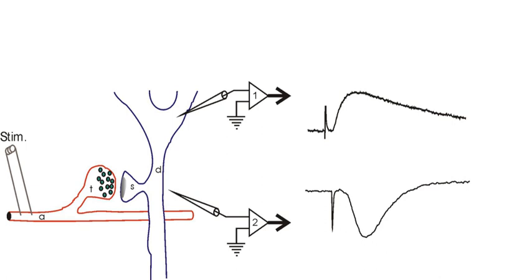Alternatively, ionic continuity may be established by perforating the patch by allowing exogenous pore-forming agents within the electrolyte to insert themselves into the membrane patch (perforated patch recording). Finally, the patch may be left intact.